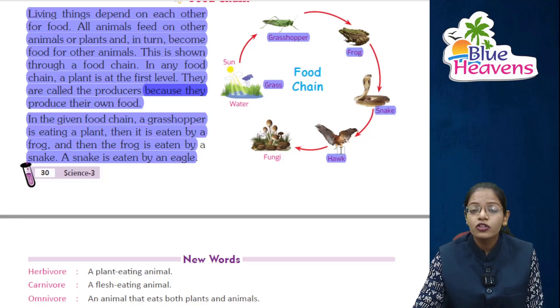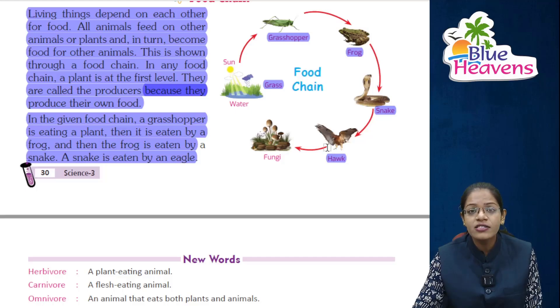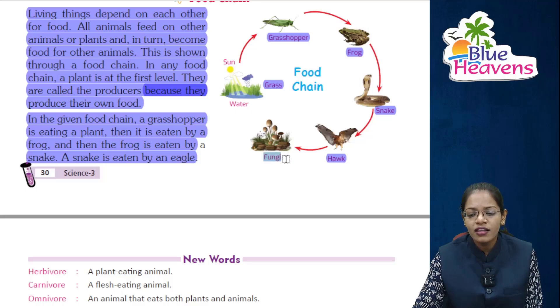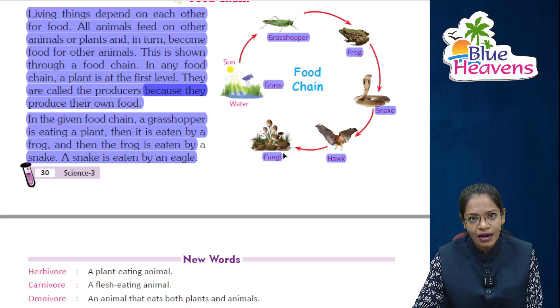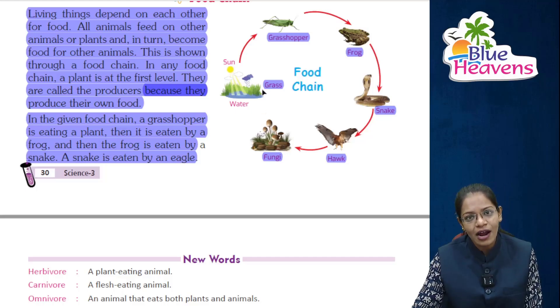After the hawk dies, its decaying matter mixes up with the soil, and fungi decompose the dead decaying matter into the soil. Then from the soil, grass grows again — and so the food chain continues.